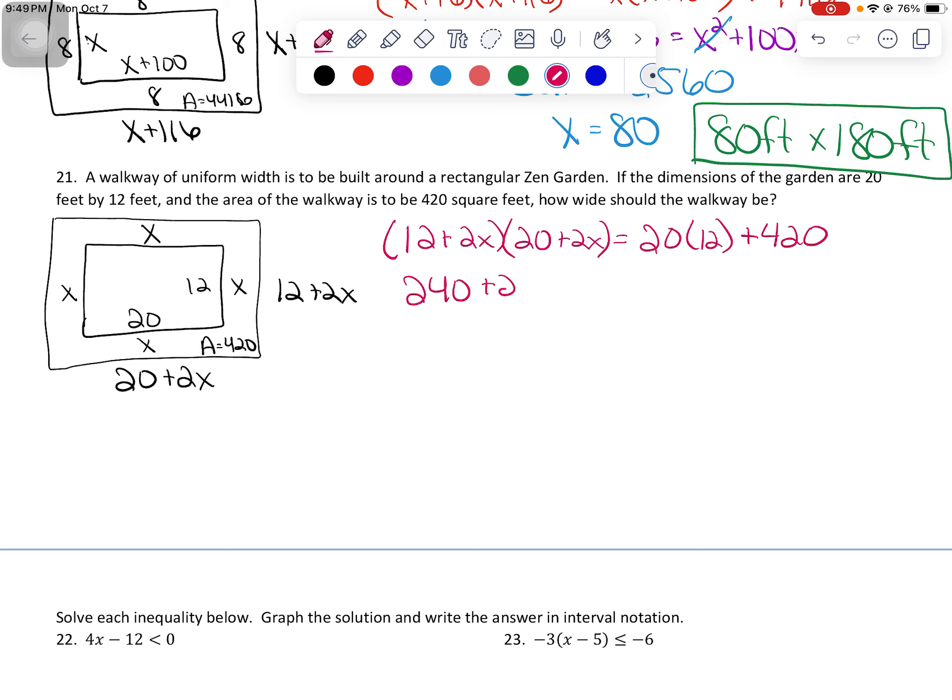Let's see what we got here. 12 times 20 is 240. 12 times 2 makes 24X. 2X times 20 makes 40X. 2X times 2X is 4X squared. That was 240 plus 420.